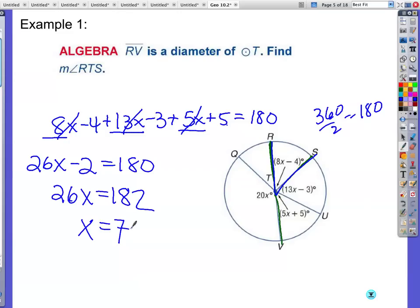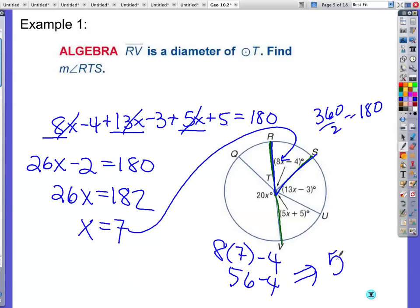Okay? The question is, find the measure of the angle RTS. So I need to put 7 back into the problem. So I have 8 times 7 minus 4. 8 times 7 is 56. That makes the angle 52 degrees.